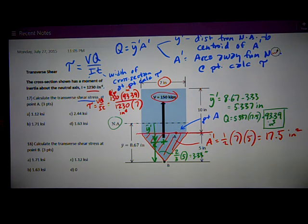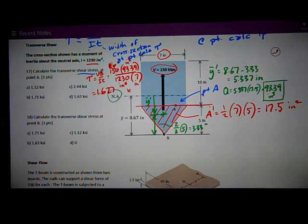And I punch my calculator, and I get that that's equal to 1.627. My units are kip inches cubed on the top. So I got kip inches cubed on the top.